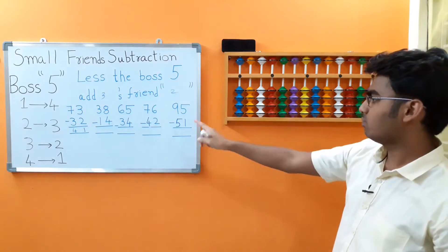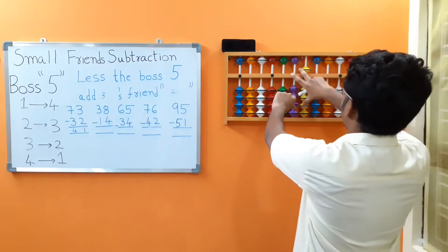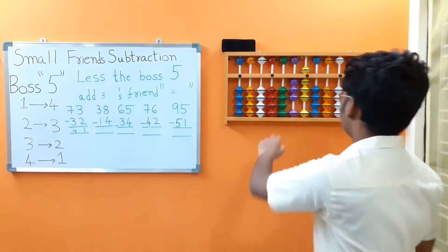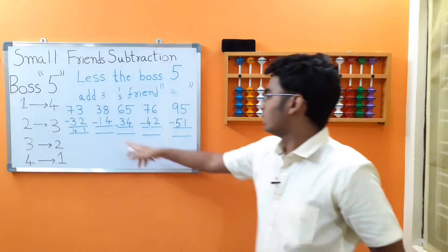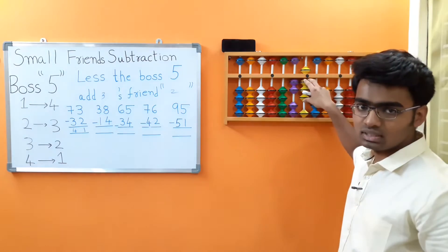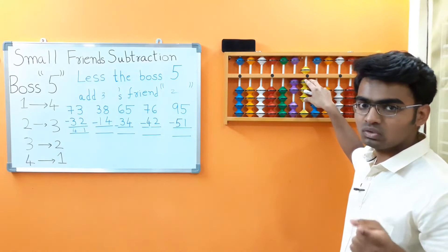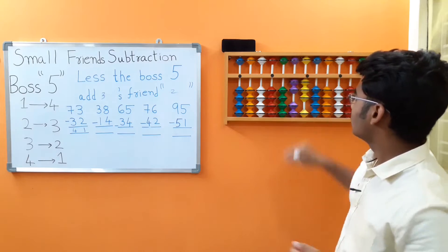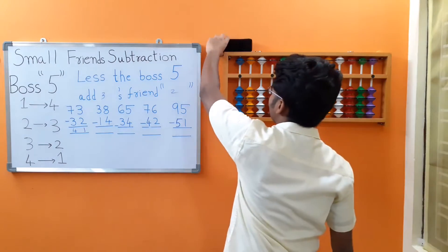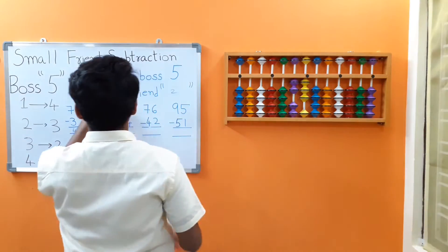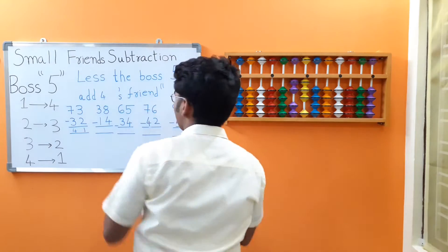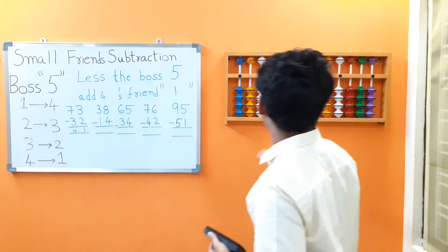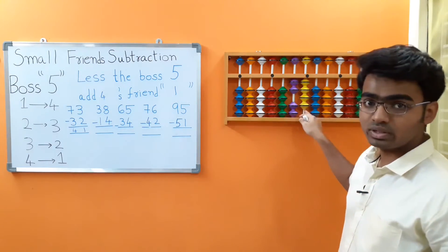Next: 38 minus 14. 3 minus 1 — subtract directly. 8 minus 4: we only have 3 beads here but we have to subtract 4. Make use of the small friends concept — less the boss 5, add 4's friend 1. We got the answer as 24.